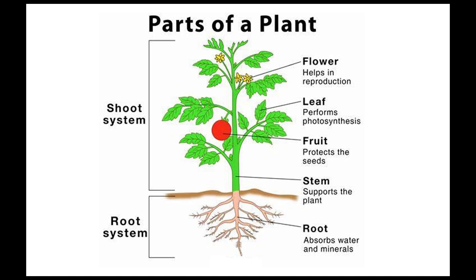As a beginner vegetable gardener, understanding basic plant anatomy and physiology is essential to ensure the successful growth and health of your plants. Here are some key concepts you should be familiar with.